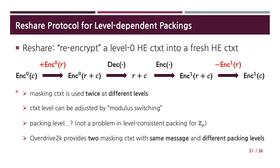Oversimplifying a bit, the reshare protocol proceeds as follows. First, we add a random ciphertext R to mask the input ciphertext C. Then we perform collaborative decryption, followed by encryption. Finally, we subtract the masking ciphertext R to reconstruct the original plaintext C. Notice that the masking ciphertext R is used twice at different levels: once to mask the input ciphertext C at level 0, and once to reconstruct the plaintext at level 1. Whereas ciphertext levels can be easily adjusted by the modular switching technique in HE, the difference in packing levels seems problematic.